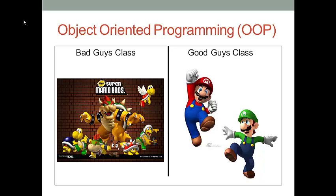We want to summarize all these common properties, characteristics, or capabilities among bad guys into a model. Next time when we create a new bad guy, we only need to make a copy from this model that has all these common properties, capabilities, or characteristics. For instance, if we want to create a new flying turtle, we only need to make a copy of the bad guy model, so we don't have to repeat and waste time developing those common properties such as kill Mario Bros. and shoot fires.